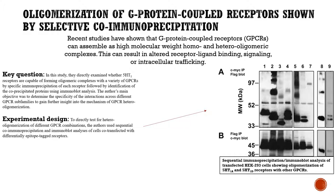To the right, the figure shows the c-Myc-tagged 5-HT1A receptor in lane number one. The receptors co-precipitated with FLAG-tagged versions of all receptors — seen in lanes two, three, four, and other GPCRs. The finding that FLAG- and c-Myc-tagged versions of the 5-HT1A receptor were co-precipitated provides direct evidence that this GPCR forms a homo-oligomer.